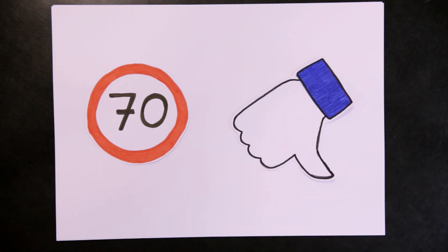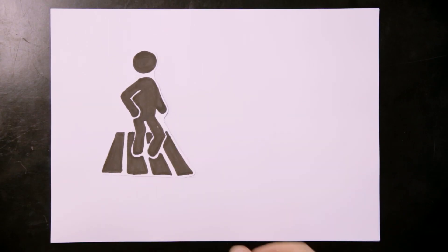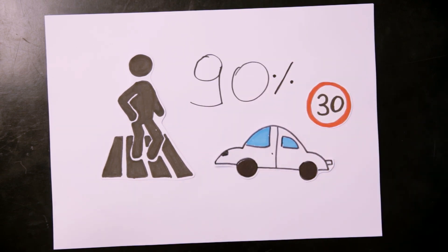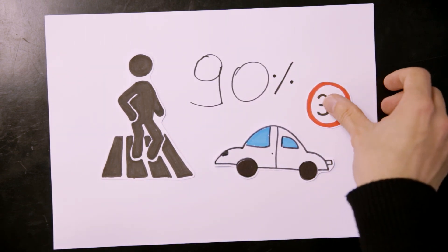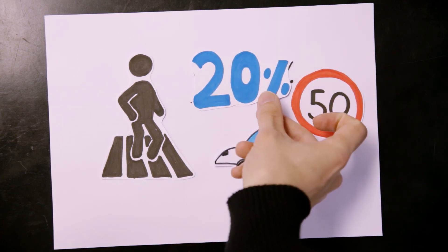Setting lower speed limits for vehicles is one key to increasing road safety. A pedestrian has a 90% chance of surviving if hit by a vehicle travelling at 30km per hour. If the car is travelling at 50km per hour, the chance of survival drops to less than 20%.